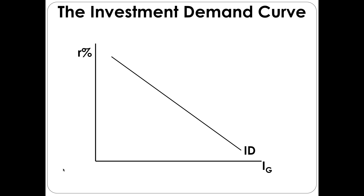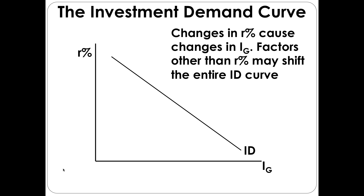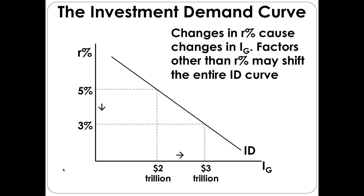As the real interest rate changes, you're going to be moving along the investment demand curve. For example, at a 5% real interest rate you might have $2 trillion in gross private investment. If you lower the real interest rate to 3%, it's now cheaper to borrow and invest, so you're going to have more gross private investment — in this case, $3 trillion.